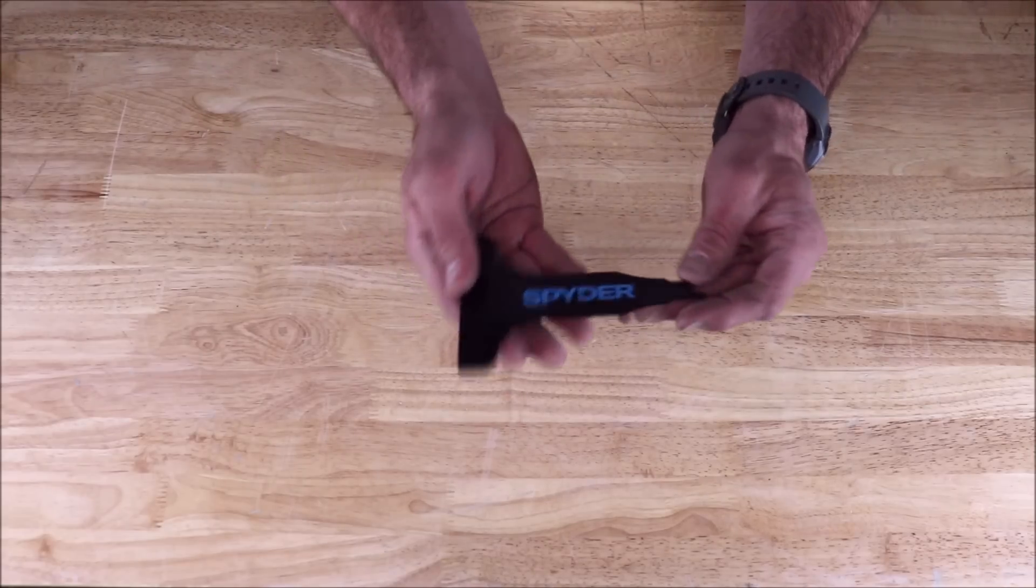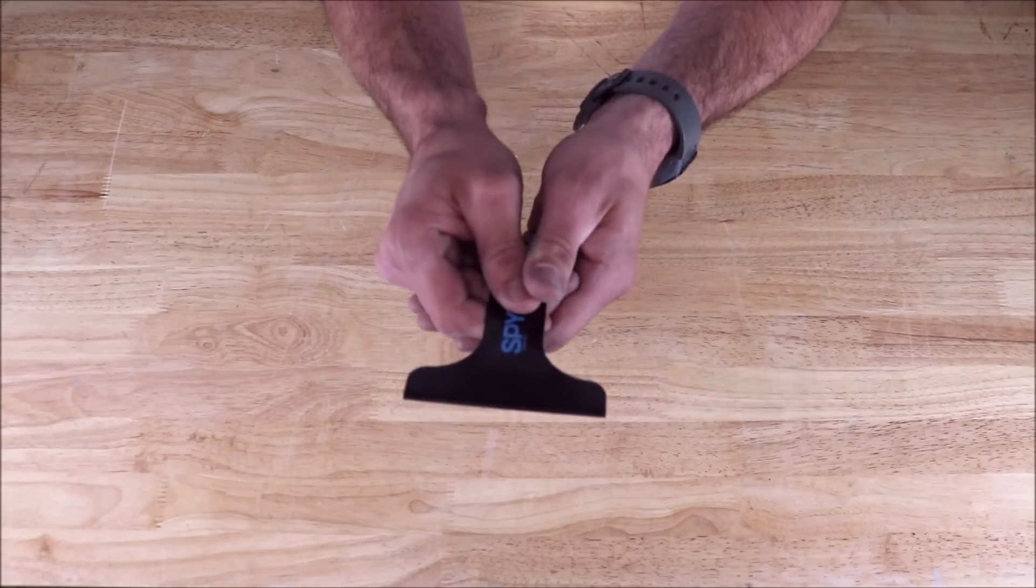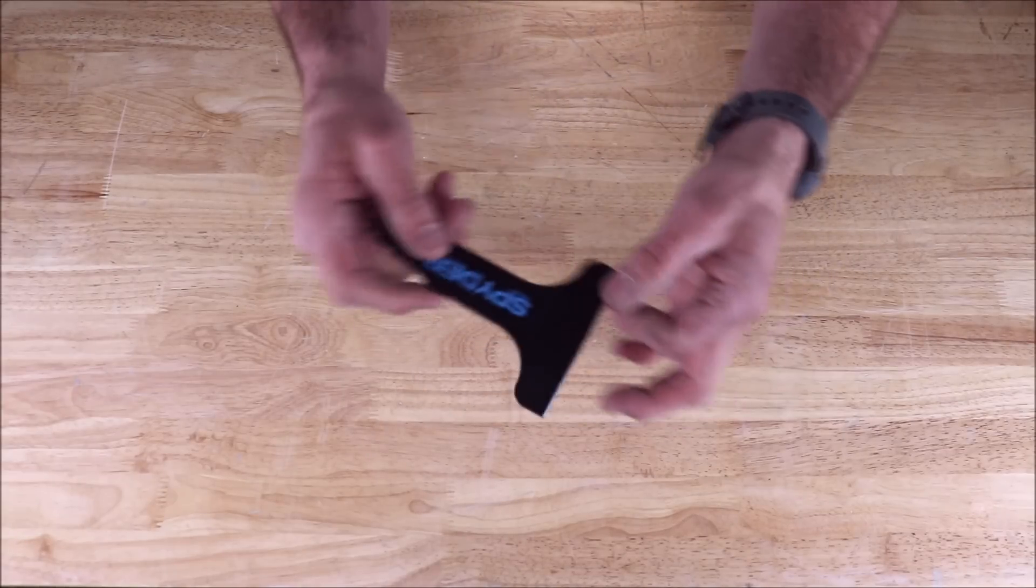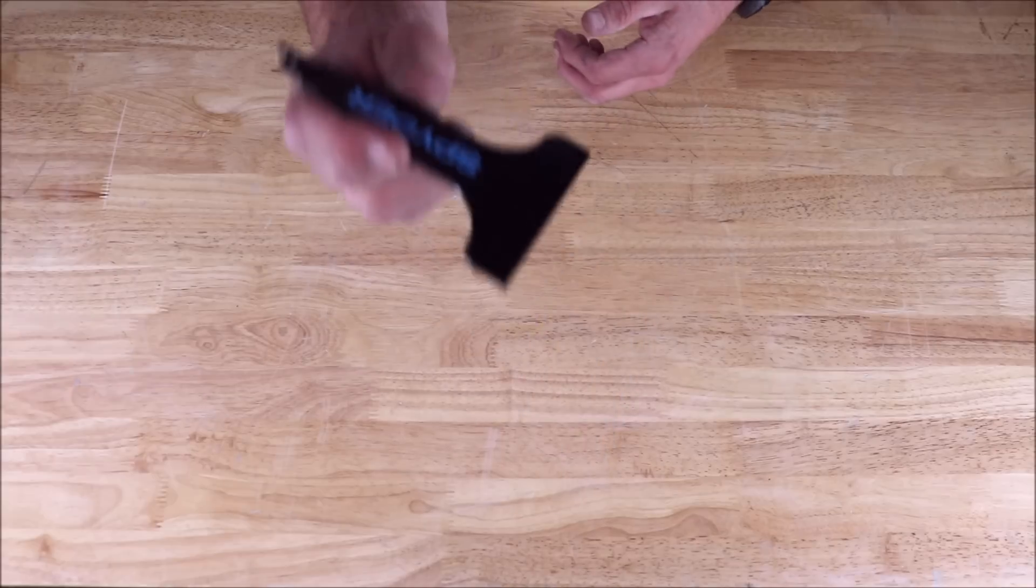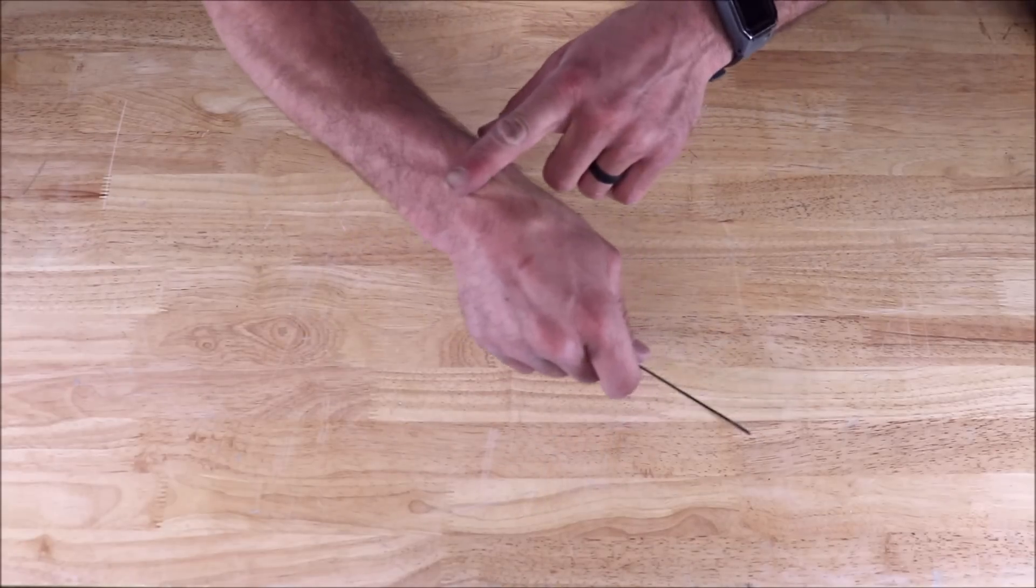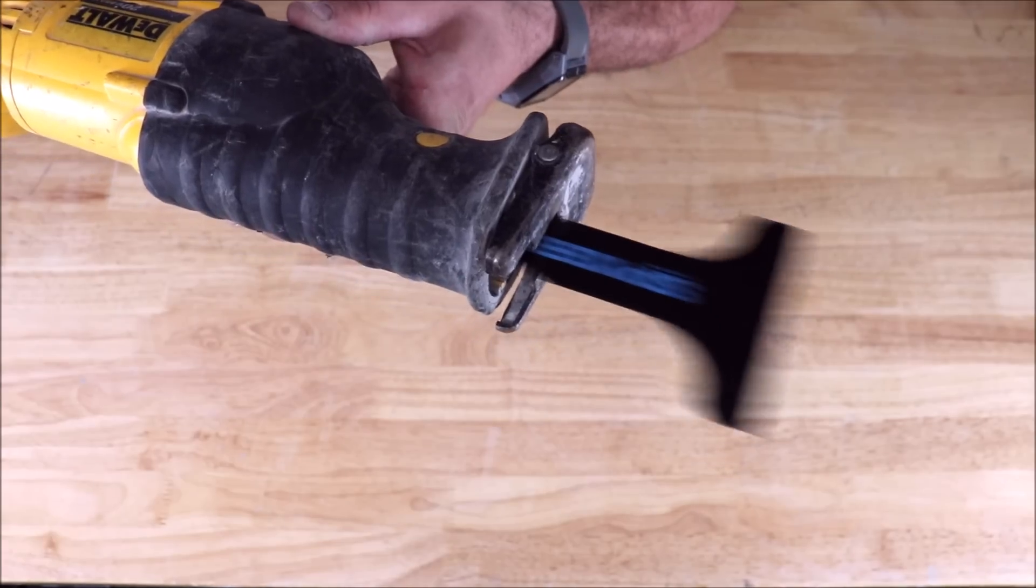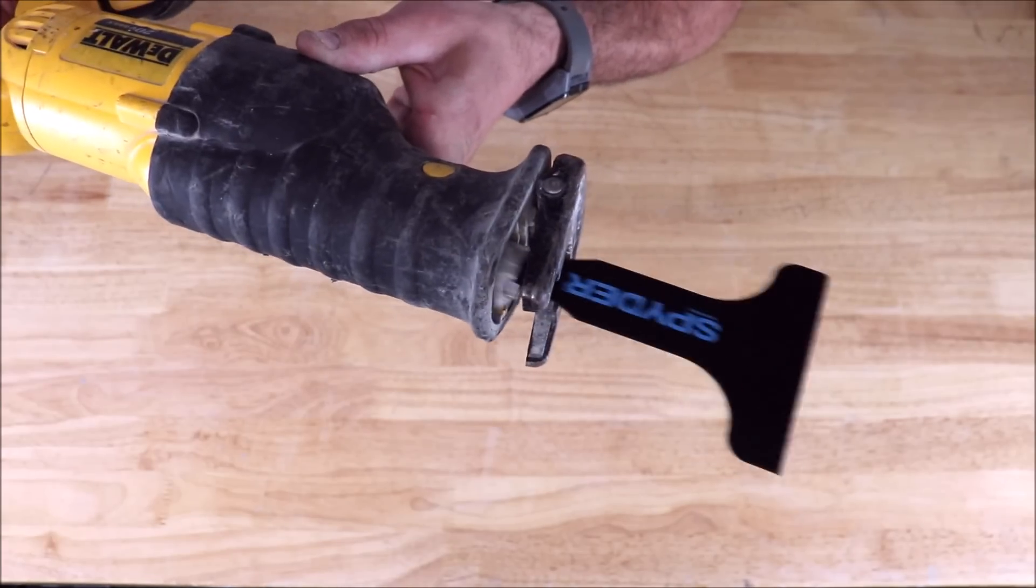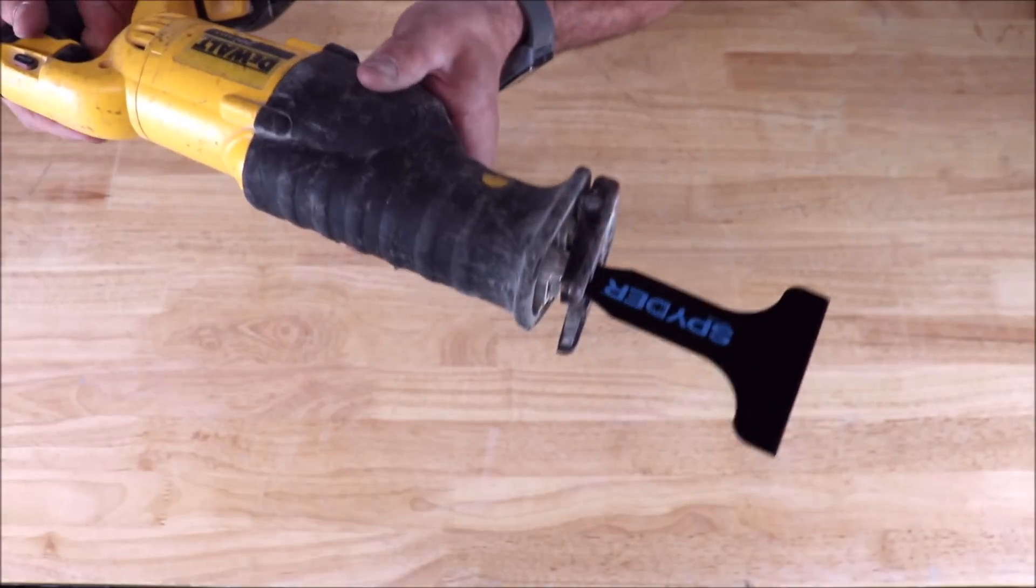Dumbest tile tool number three: this right here, a scraper for thinset mortar or glue that attaches to your reciprocating saw. This bit here can give you serious injury in your wrist because of the reciprocating action.